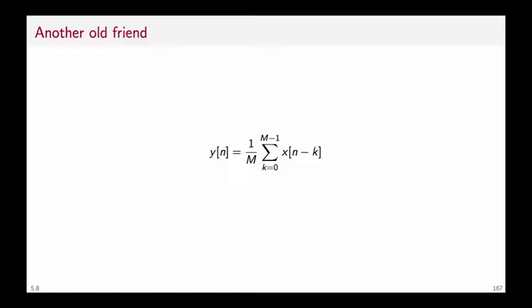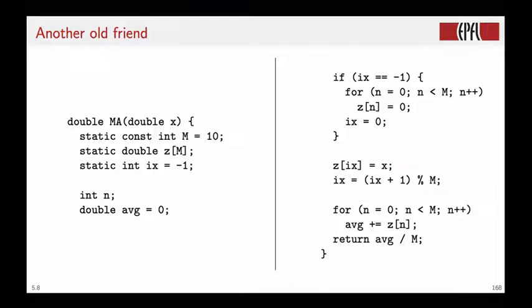We can try to do the same with another old friend, the moving average, whose CCDE is this one. And if we try to implement the moving average in C, using the same paradigm as before, we define a function that we call each time a new input sample arrives. And then we do some initialization here. So we have to decide on the length of the moving average. This will be a constant, m.